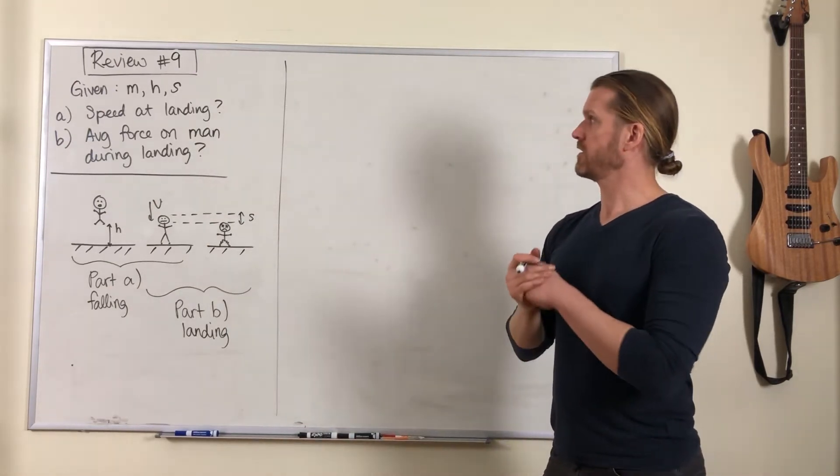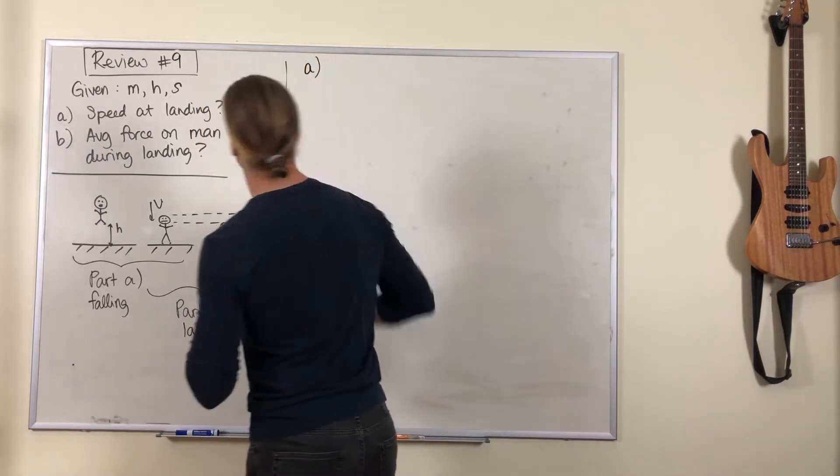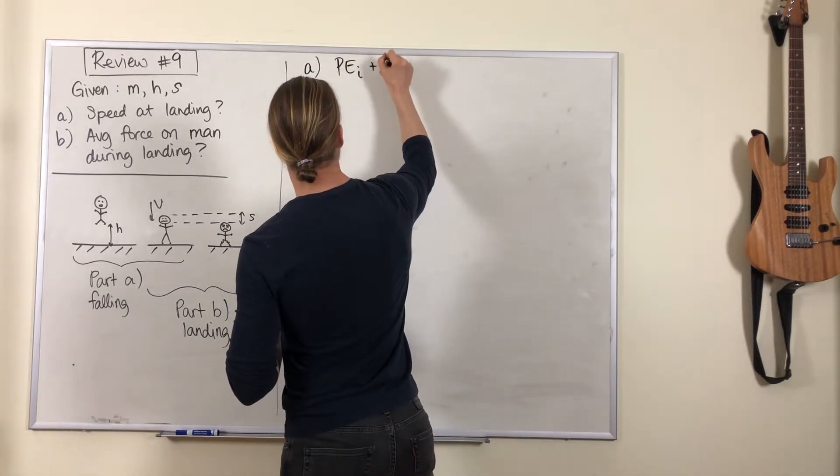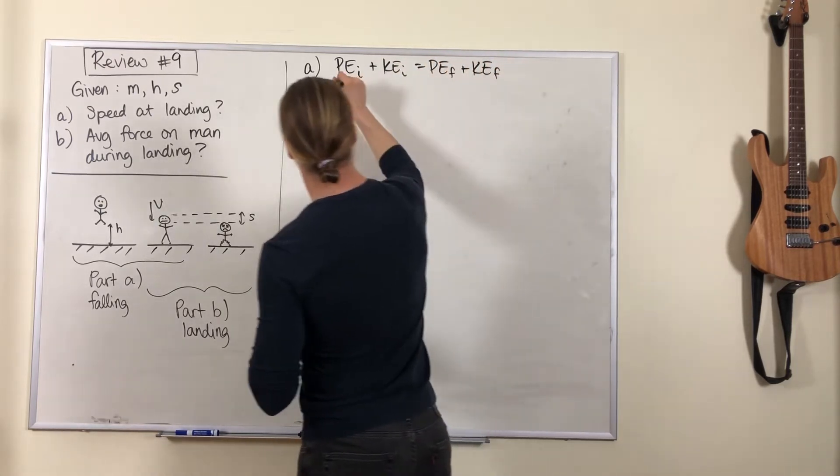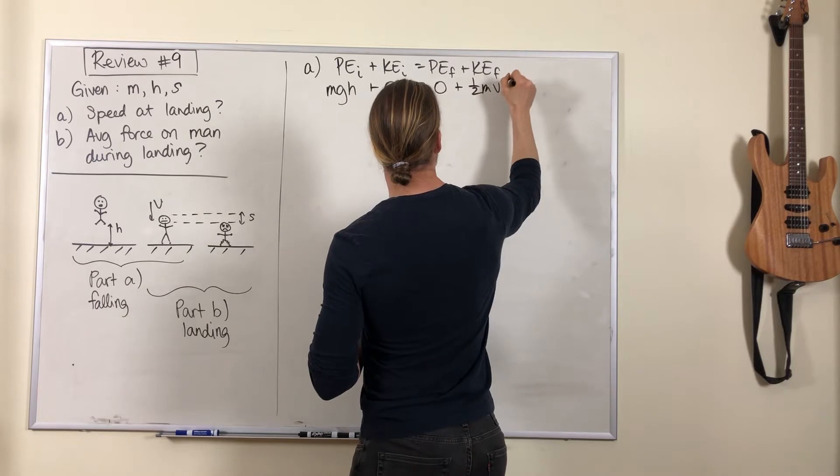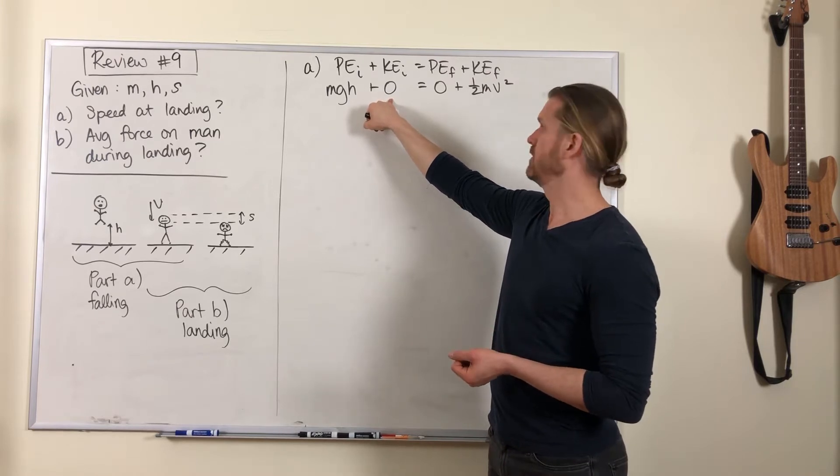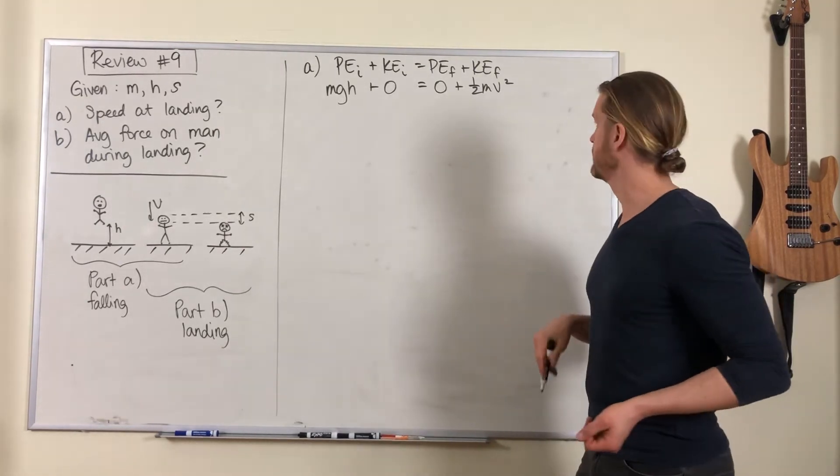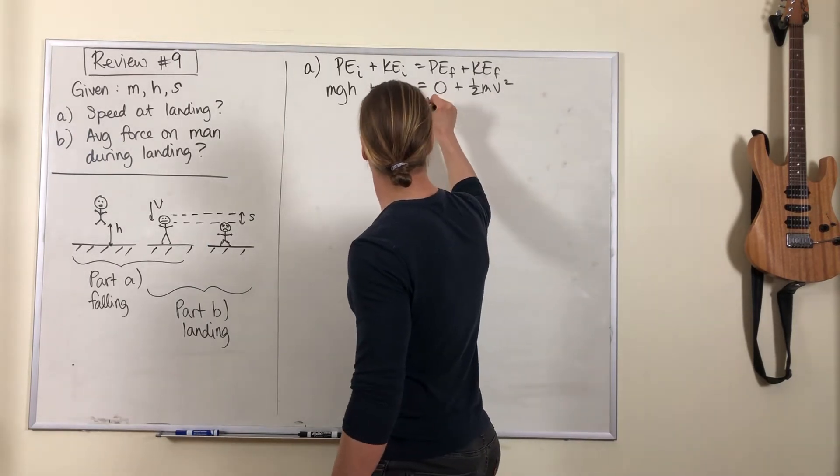Let's do these calculations. Part a is pretty simple: conservation of energy. He's falling, so he starts at rest jumping out of the window, zero kinetic energy. He ends up at ground level, which we'll call zero potential energy. That means his speed upon landing is square root of 2gh.